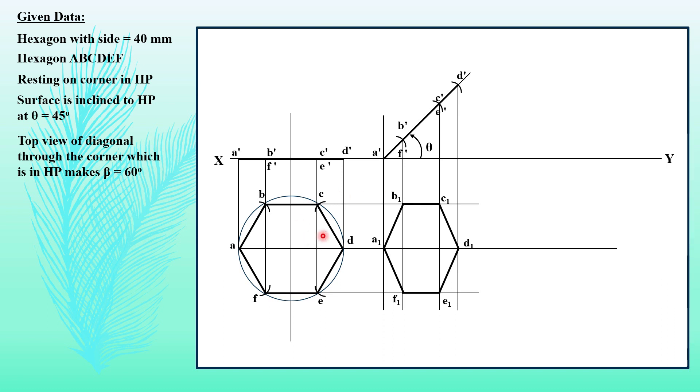We have to incline the top view of diagonal through the resting corner. Resting corner is A, the diagonal is AD, and the top view of that diagonal is A1 D1. So we have to keep this line A1 D1 at 60 degree angle. Taking a vertical projector, taking an angle beta here, that is 60 degrees in this question, drawing a line. Naming this point as A1 now.